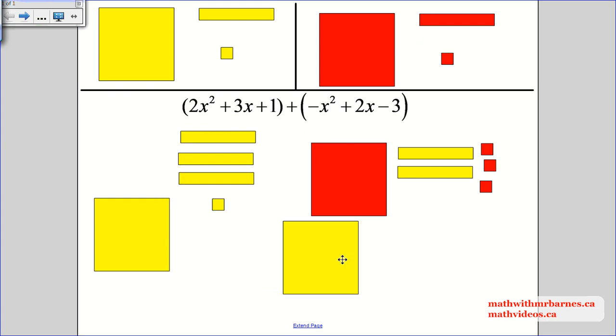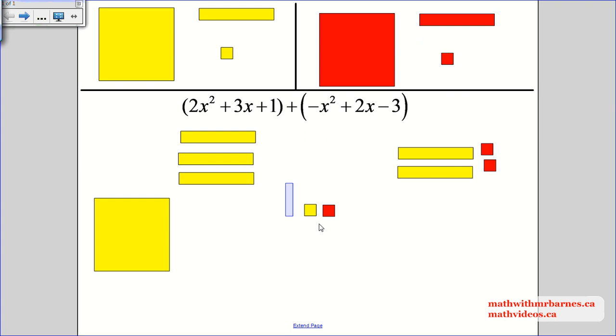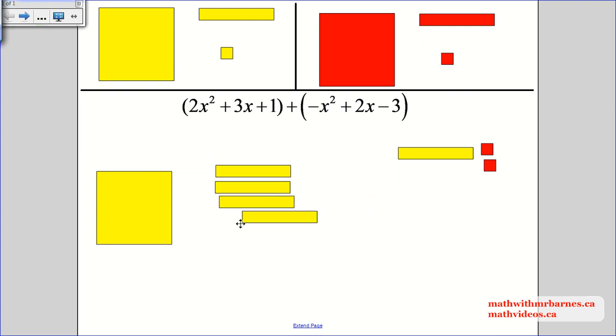Let's make some zero pairs. So we got this guy and this guy. That's a zero pair. So they're gone. This guy and this guy, zero pair. They're gone. And then we combine our like terms. There's no other like terms besides my x tiles. So these are like terms. So they all go together.